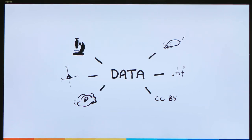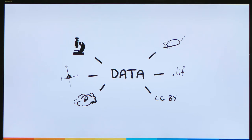We integrate all of our data into a knowledge graph system and register metadata — data about data — such as species or location in the brain. We link a dataset to metadata categories so that the dataset can be queried, accessed, and downloaded for further use around the world.